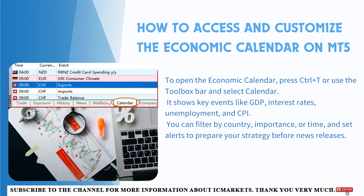How to access and customize the economic calendar on MT5: To open the economic calendar, open the toolbox bar or press the shortcut key Control + T, then select the Calendar tab. Here you can see a list of upcoming events, including GDP, interest rates, unemployment rate, and CPI. You can filter by country, importance, and sort by time. IC Markets also allows sending notifications before news is released so that you can proactively adjust your strategy.